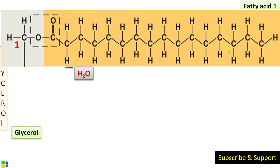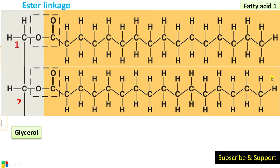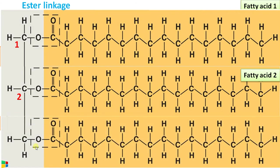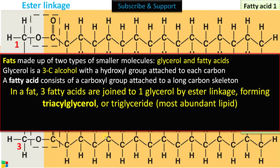The ester linkage is O–C double bond O. The first carbon OH of glycerol combines with fatty acid 1 via ester linkage. The same happens with the second carbon — fatty acid 2 combines with the second carbon OH of glycerol — and likewise with the third carbon OH, which combines with the carboxyl group of fatty acid 3 by ester linkage. In a fat, three fatty acids are joined to one glycerol molecule by ester linkage, forming triacylglycerol.